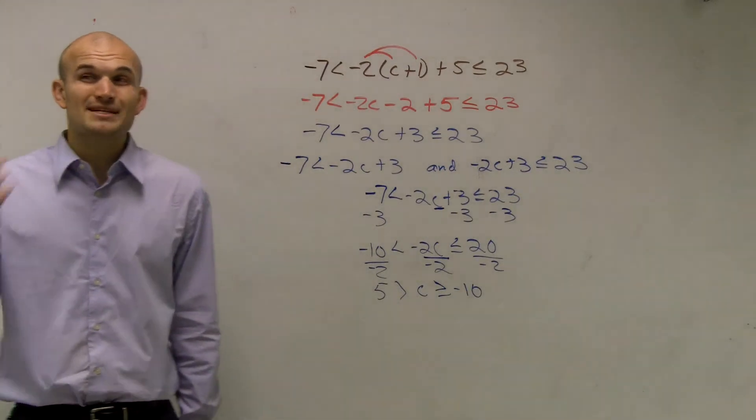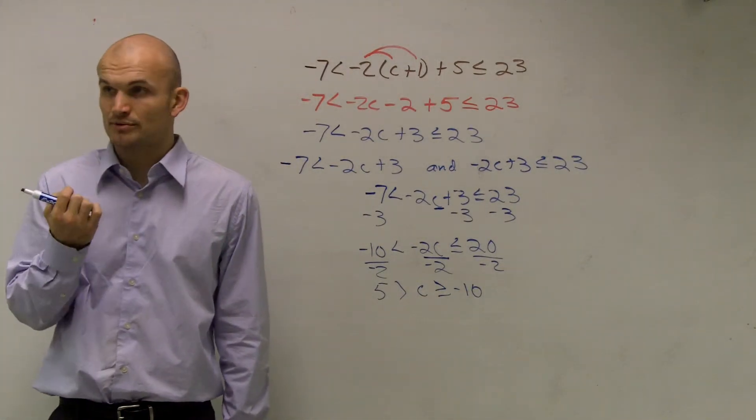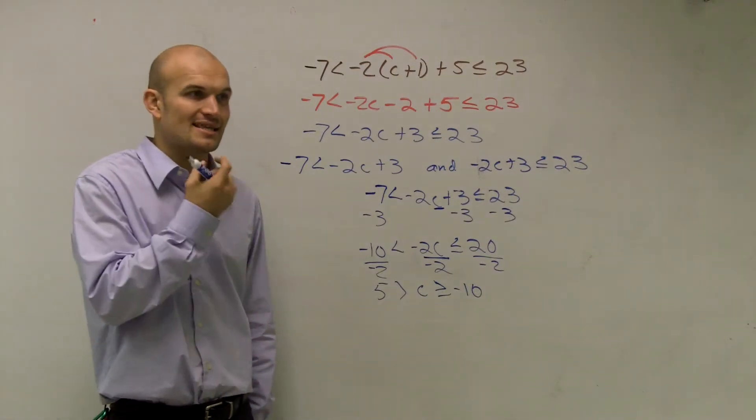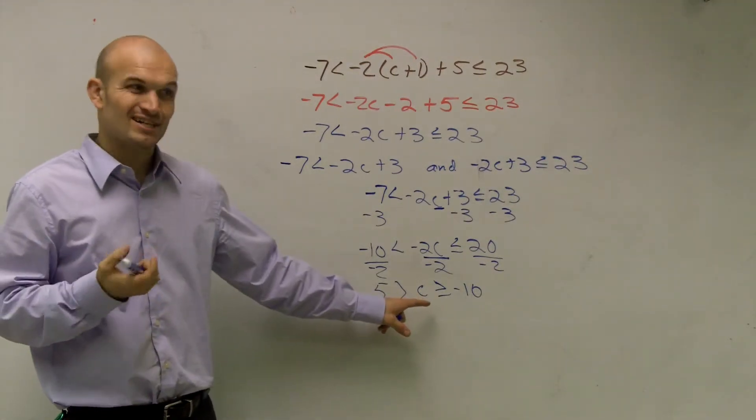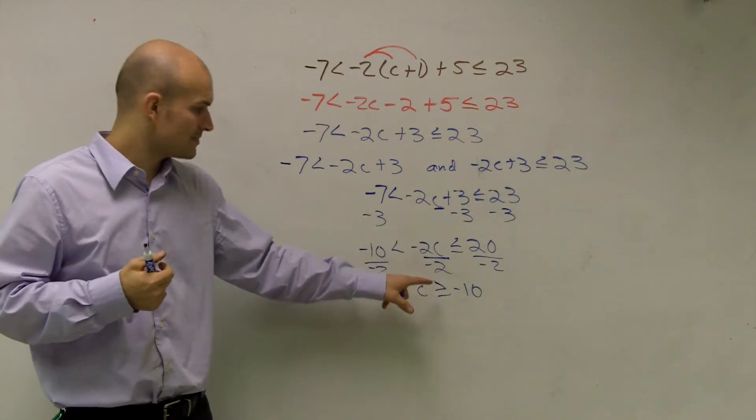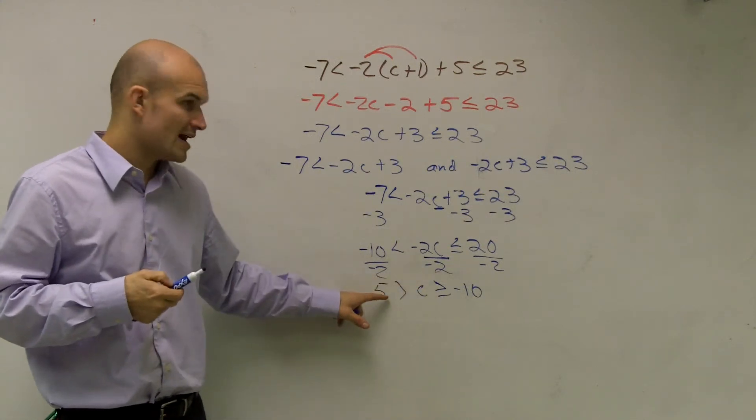So what I'm going to do is I'm going to say this out loud from the variable. Always, when you're doing these guys, say this out loud from your variable. C is less than 5, but it's greater than negative 10.